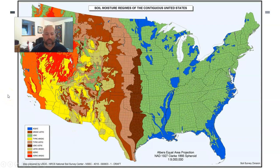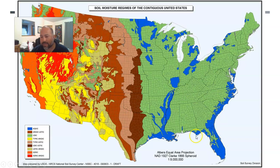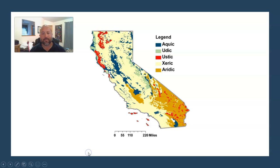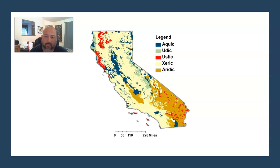Here's a look at soil moisture regimes. We get typic aridic out here in Bakersfield, as opposed to udic for much of the eastern United States, or aquic areas, which makes sense for the eastern border regions and the Mississippi Valley. You can also see aquic areas for the San Francisco Bay and delta areas in the upper part of the Central Valley. In California, we have our aquic areas in the delta, and we can see udic, ustic, and xeric — though Bakersfield might fall between xeric and aridic depending on exactly where you are on the map.